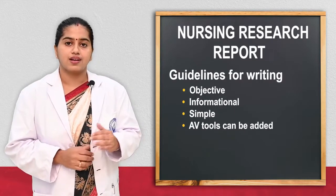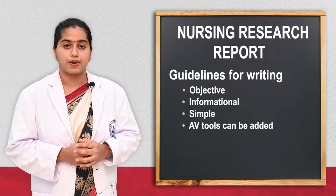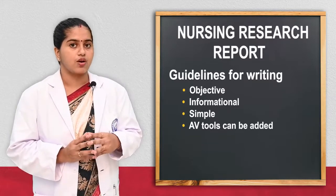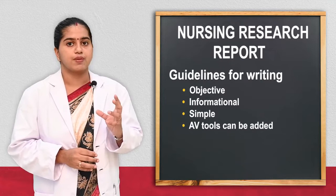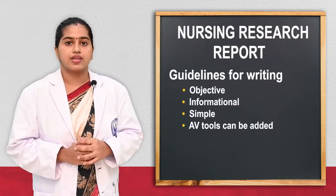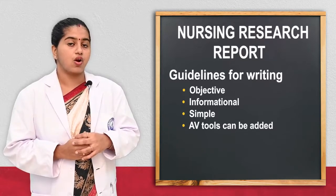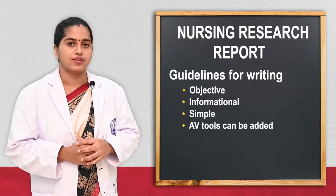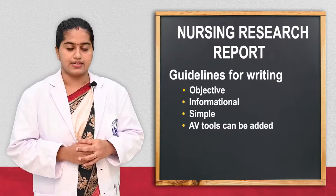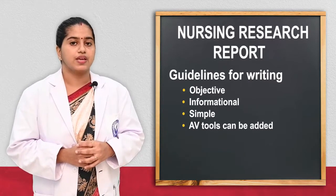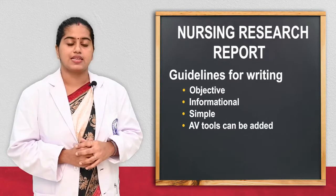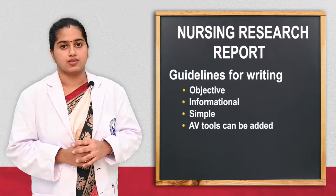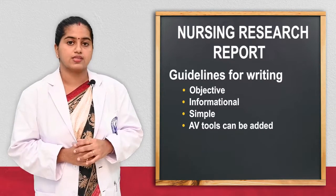Next we will see what are the guidelines that have to be followed while preparing the nursing research report. First one is it should be based on the objective — whatever the objective of the study, the researcher has to make the research report accordingly. Second one is it should help in gathering knowledge or improving thinking — the research report should improve the thinking level and knowledge of the readers. Next one is it should use simple, easily understandable language, free from technical bias, errors, or technical jargon.